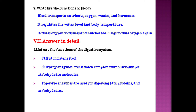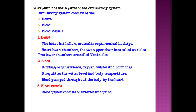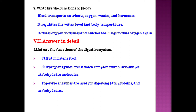Now let us see the detailed answer questions. First question: List out the functions of the digestive system. Saliva moistens food. Salivary enzymes break down complex starch into simple carbohydrate molecules. Digestive enzymes are used for digesting fats, proteins and carbohydrates. These are the important functions of the digestive system.